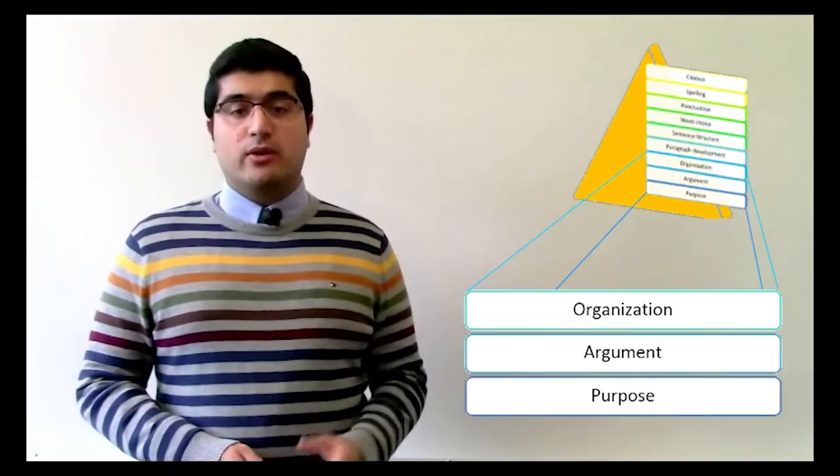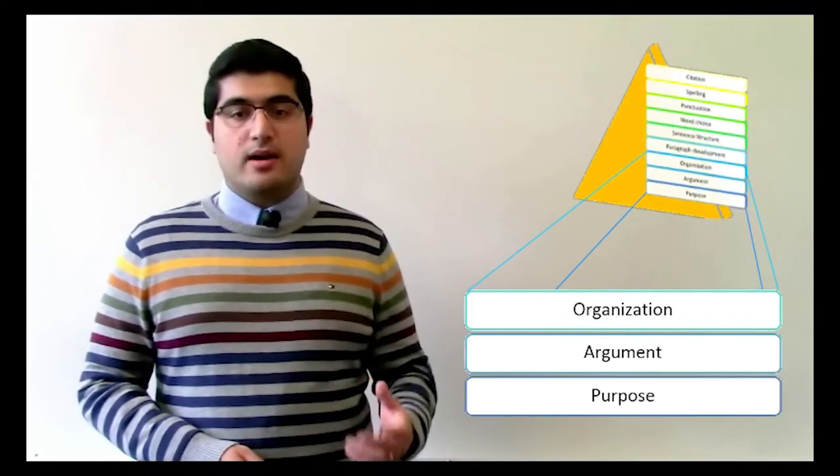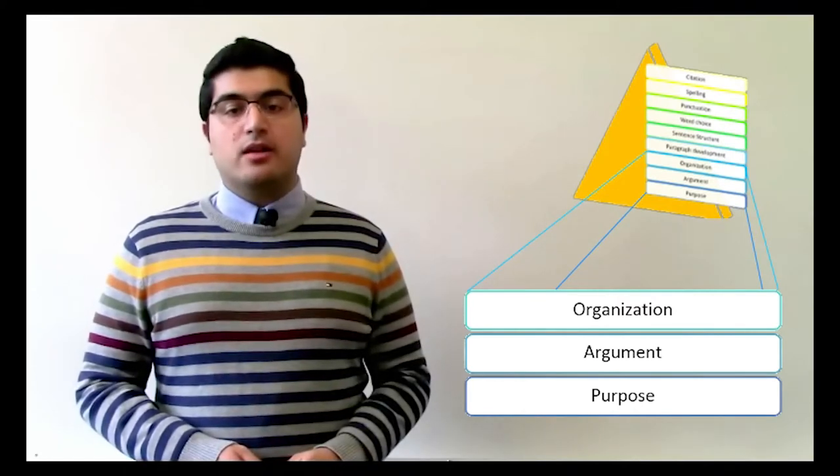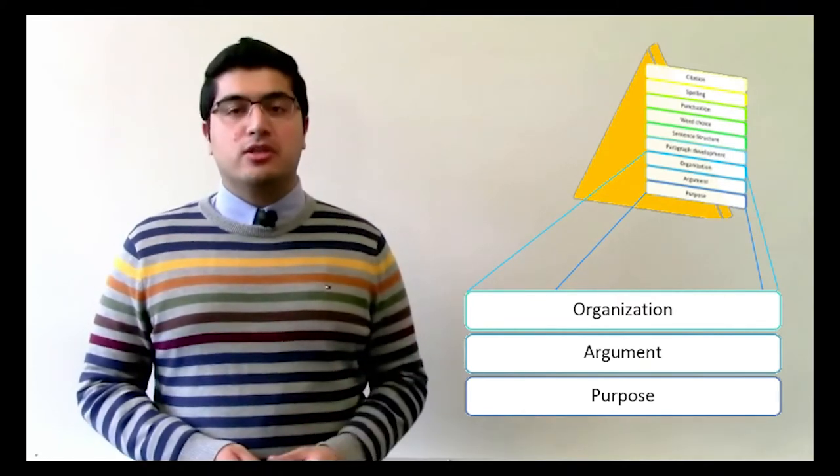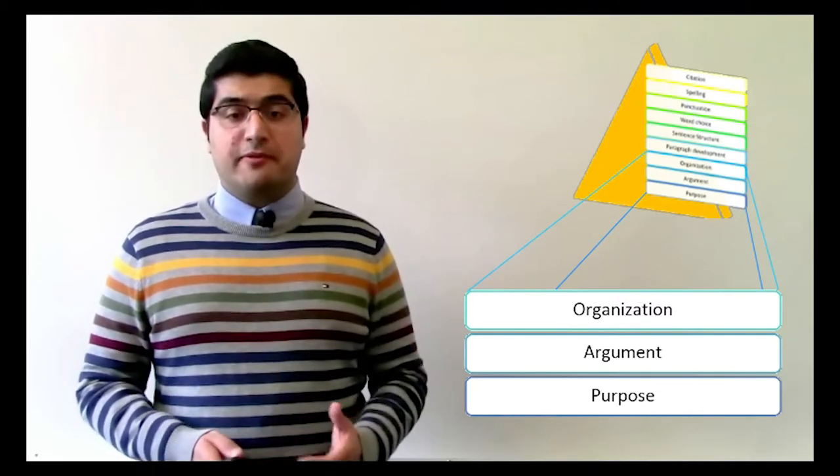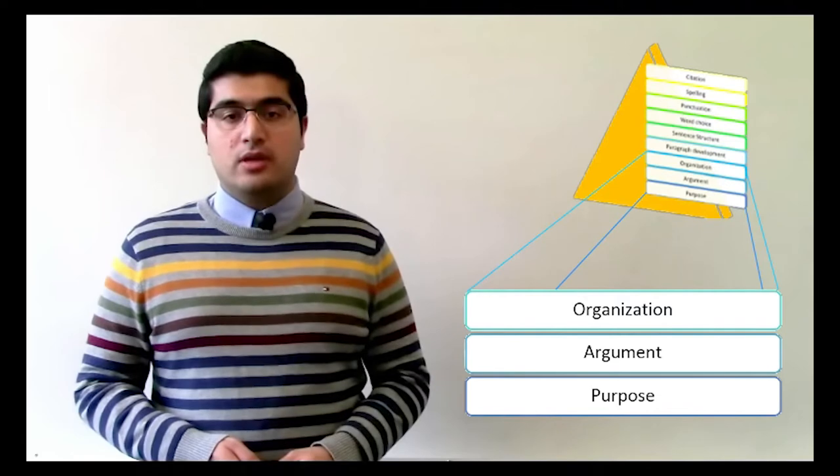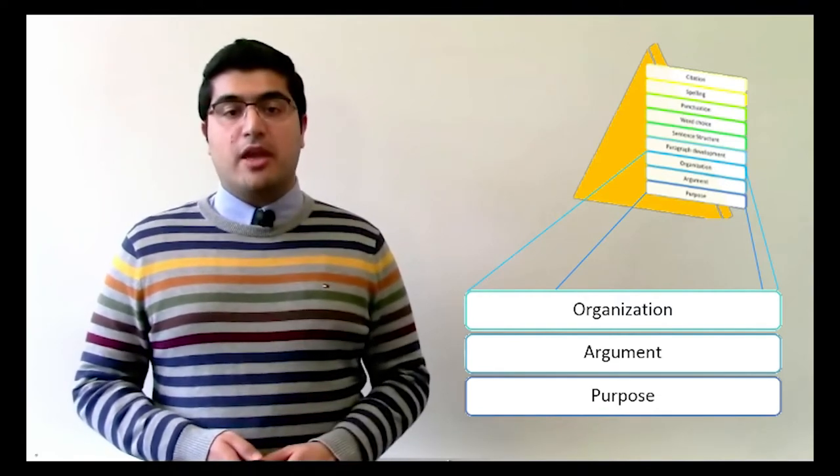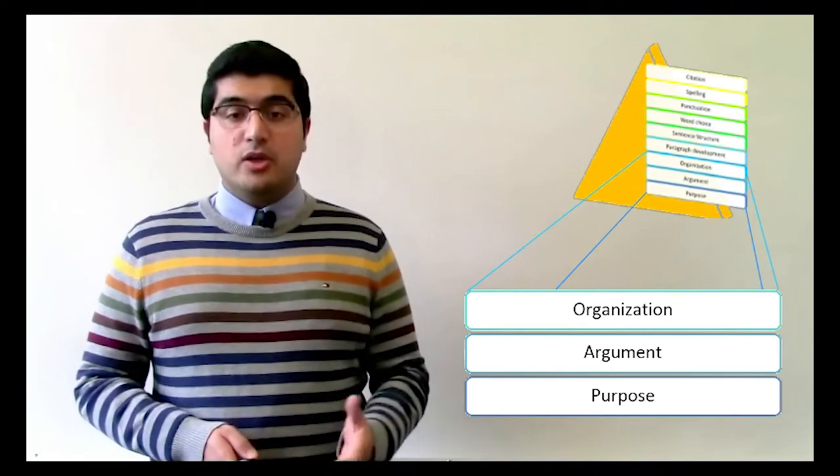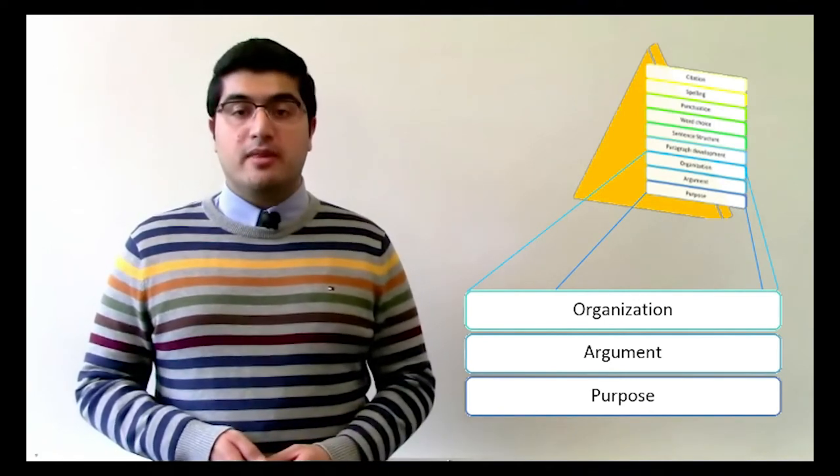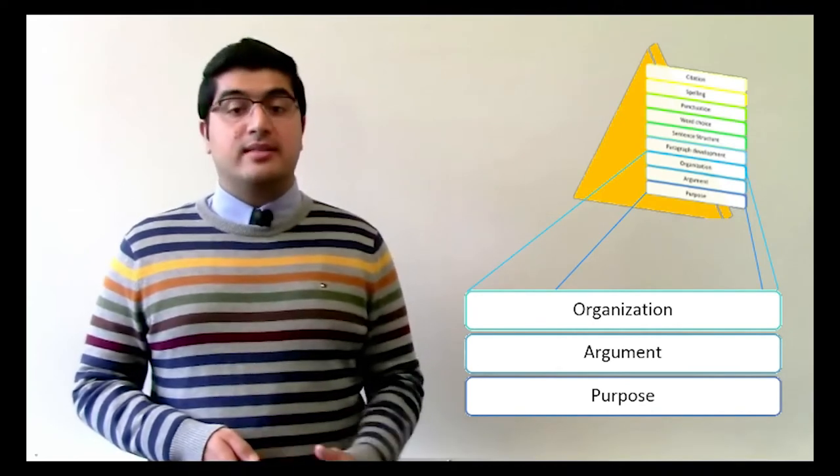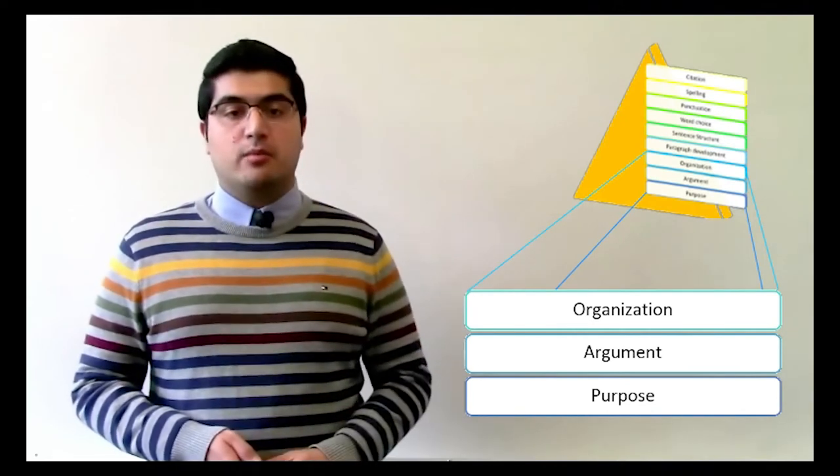At the bottom we have the most general writing concerns like purpose, argument, and organization. At this stage, you check your line of argument and make sure your paper is actually doing what it's supposed to do. What is your research question? Is your paper effectively answering that question? Check your line of argument and make sure it makes sense. Have you organized your points clearly? Does your paper follow the outline you drew in the beginning? If you do not have an outline, make one based on what you have written and see if it shows a logical line of argument.